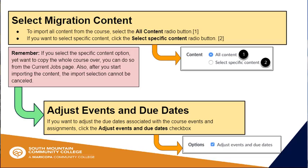Then you will be prompted to select what content to migrate: All Content or Select Specific Content. If you choose All Content, the entire course will be copied over. If you choose Select Specific Content, after you click Import Content, you will be prompted to choose which assignments, modules, pages, and discussions from the Current Jobs page. Remember that if you select the specific content option yet want to copy the whole course over, you can do so from the Current Jobs page.